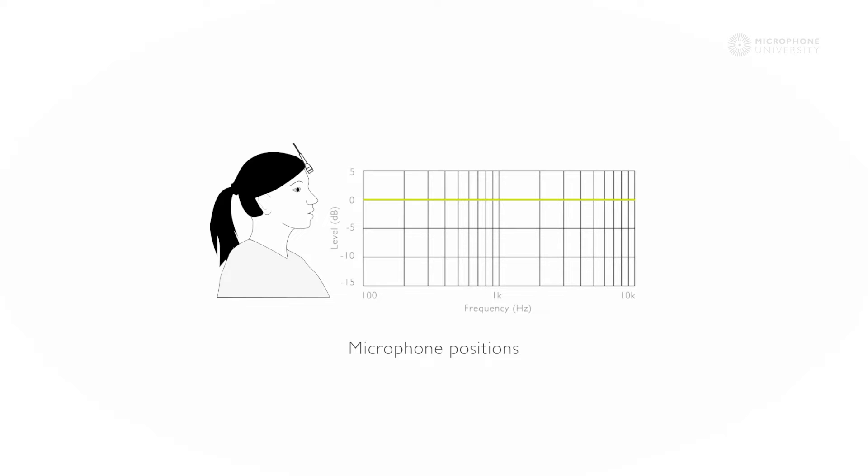If we move the microphone backwards to the position just in front of the ear, we see that we then lose a lot of the high frequencies. It sounds like this.